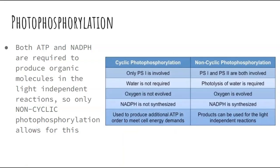Both ATP and NADPH are required to produce organic molecules in the next process — the light-independent reaction. The cyclic photophosphorylation is important to know, but when talking about photosynthesis in the most general sense and the two-step process, only non-cyclic photophosphorylation allows for the entire process to happen. You need both ATP and NADPH to actually get to the end of photosynthesis, and only non-cyclic photophosphorylation can do that.